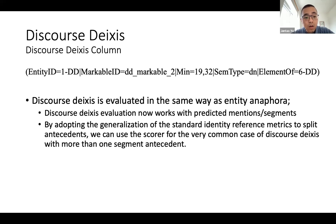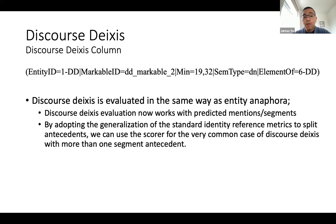In the UA scorer, discourse deixis is evaluated the same way as entity anaphora. We use the same symmetric metrics and all metrics can support discourse deixis. This has two advantages: the discourse deixis evaluation works directly on predicted mentions with no assumption problem, and because of the extensions for split antecedent evaluation, the scorer can assess the very common case of discourse deixis with more than one segment antecedent. This makes the scorer work well for discourse deixis.